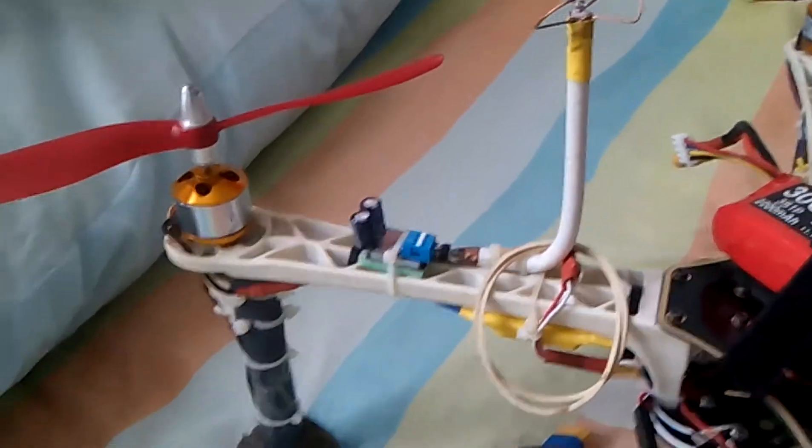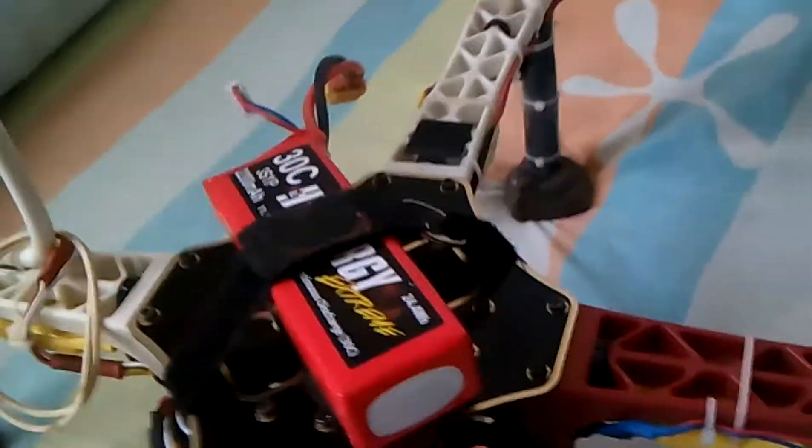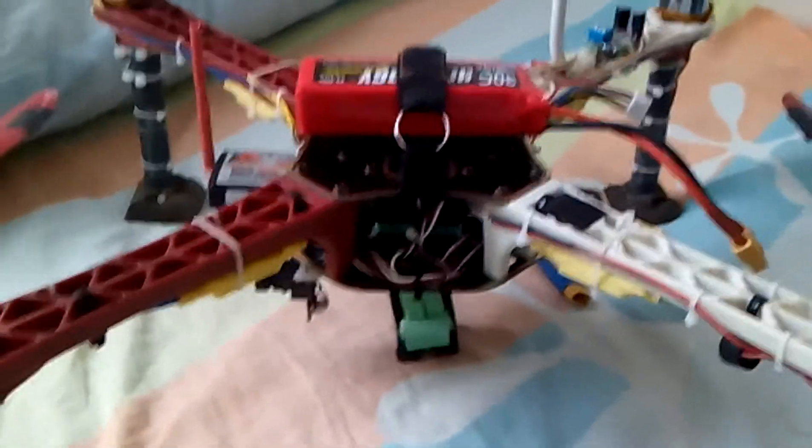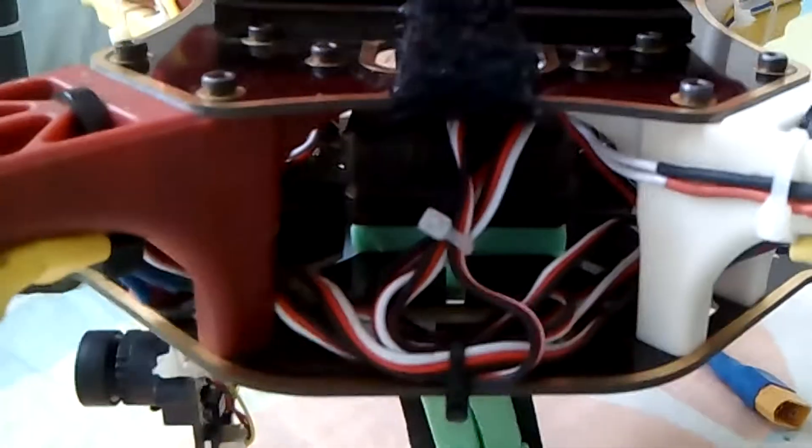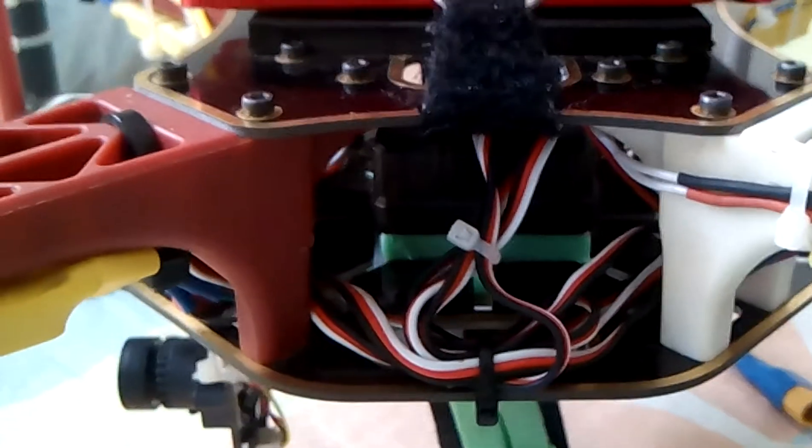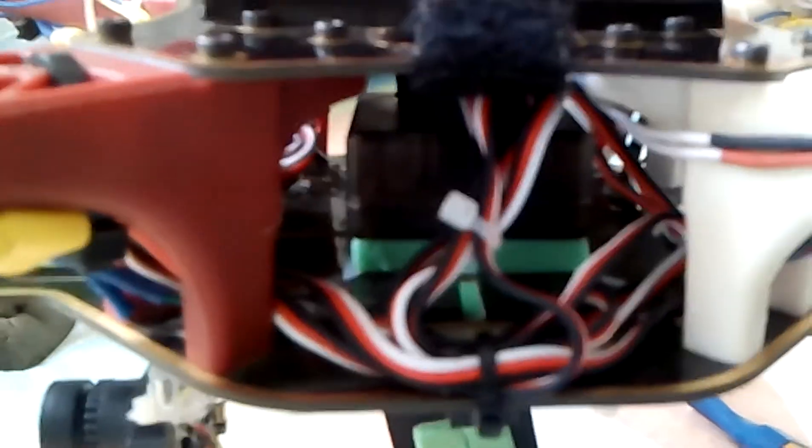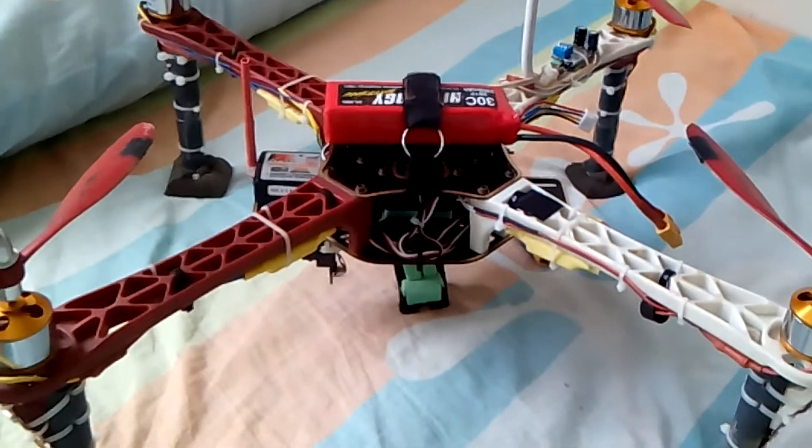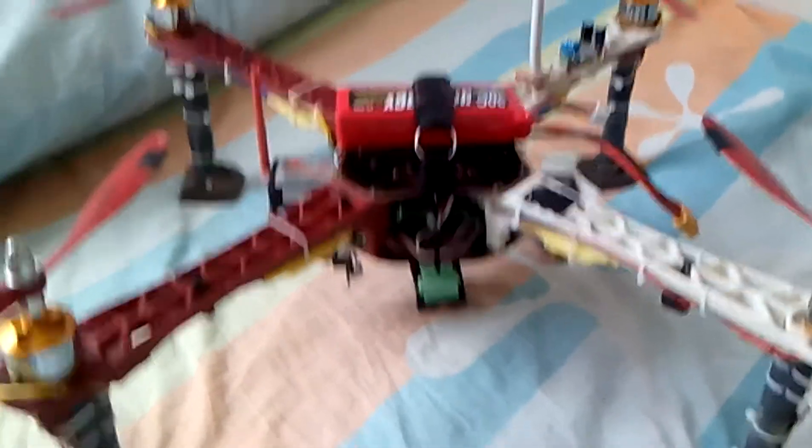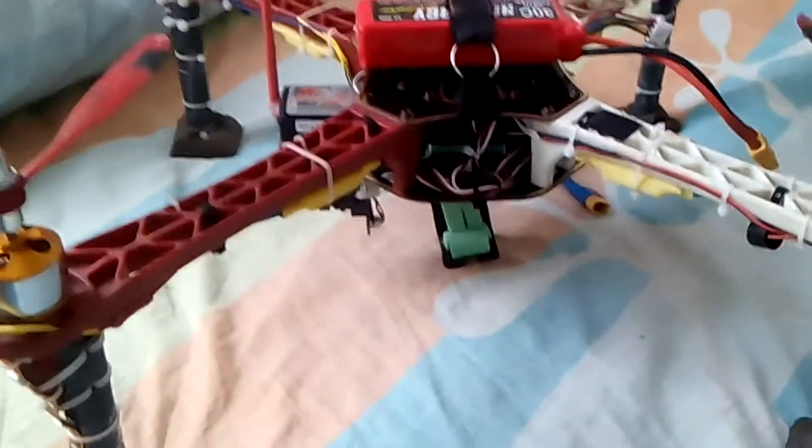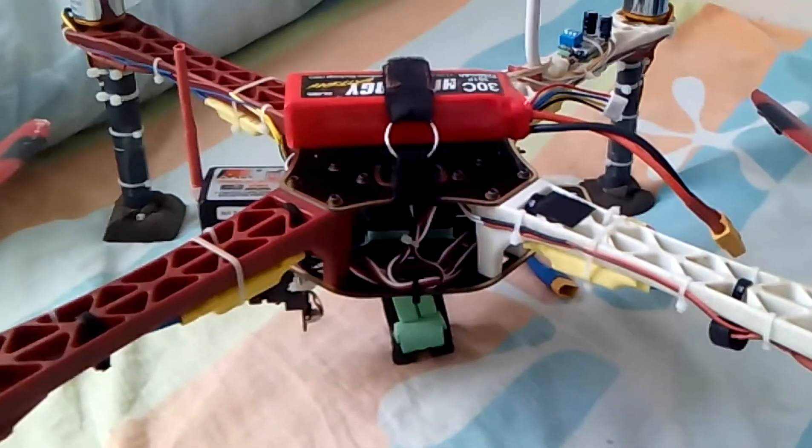But the thing I'm about to talk about right now is I used to have a KK2 here, and yesterday I swapped for a Flip 32 Plus. Not sure if you can see it there, it's inside a little box. In a few days I'm gonna be installing GPS, a Neo-6, but for now I don't have it.